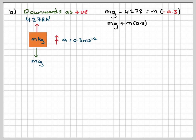So working with that to find m, you get mg, if we move this to the other side, it will become plus m times 0.3 is equal to 4,278. m is a common factor, so we've got m times g plus 0.3 is equal to 4,278, and therefore m will be 4,278 divided by g plus 0.3.